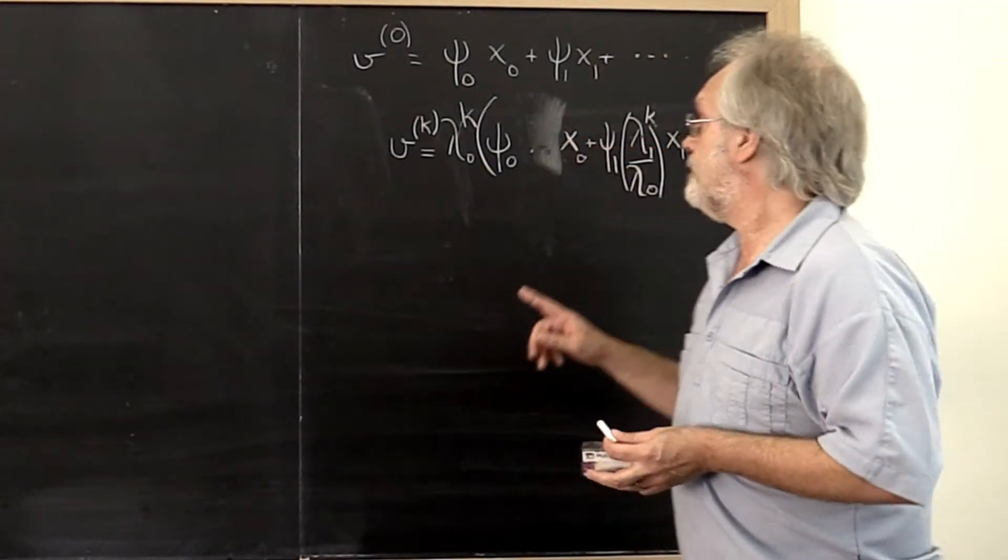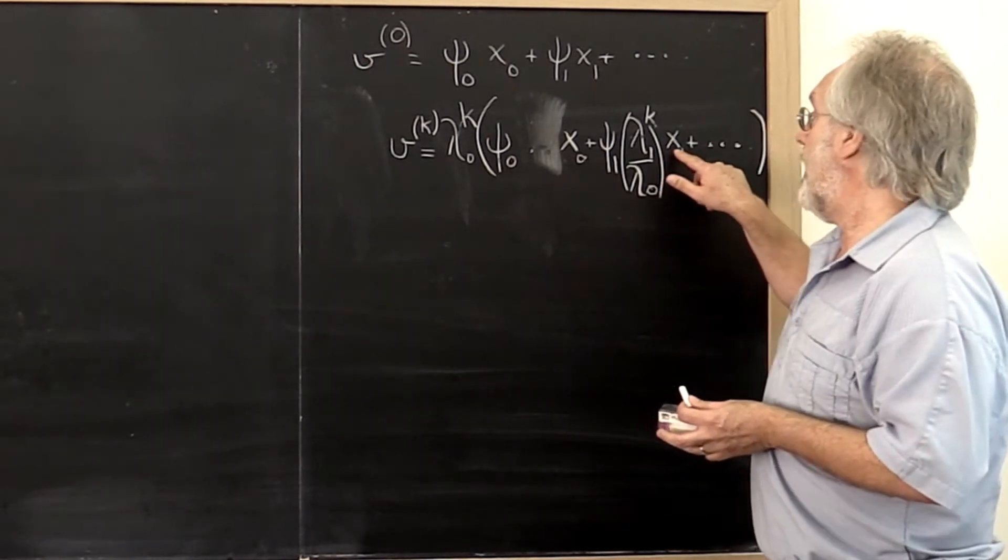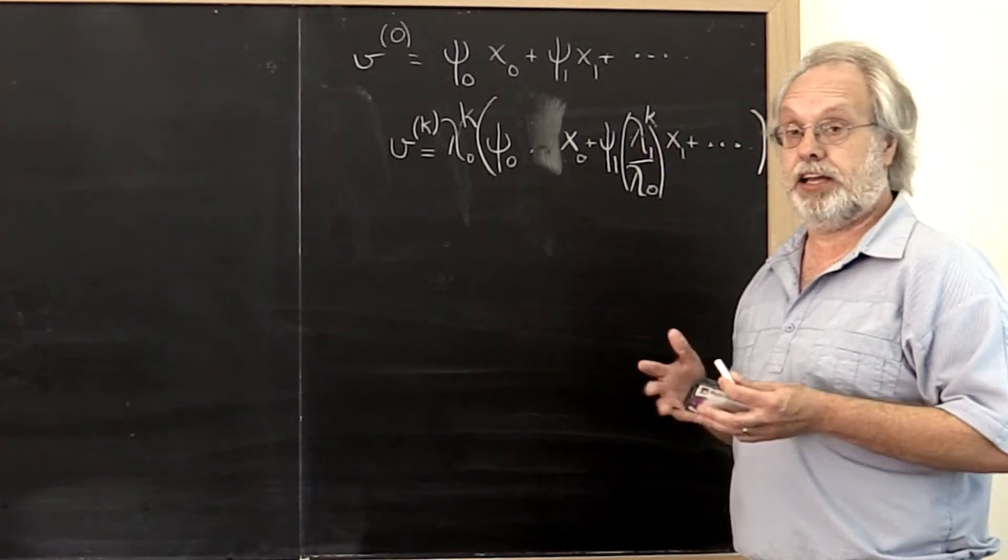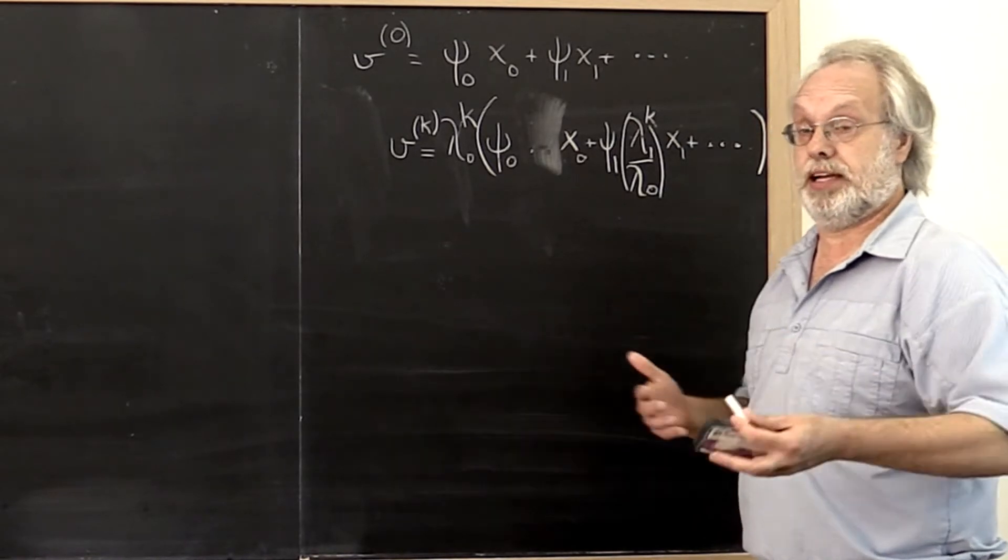What if we wanted to find the direction of the eigenvector associated with lambda one, the eigenvalue that is second largest in magnitude?